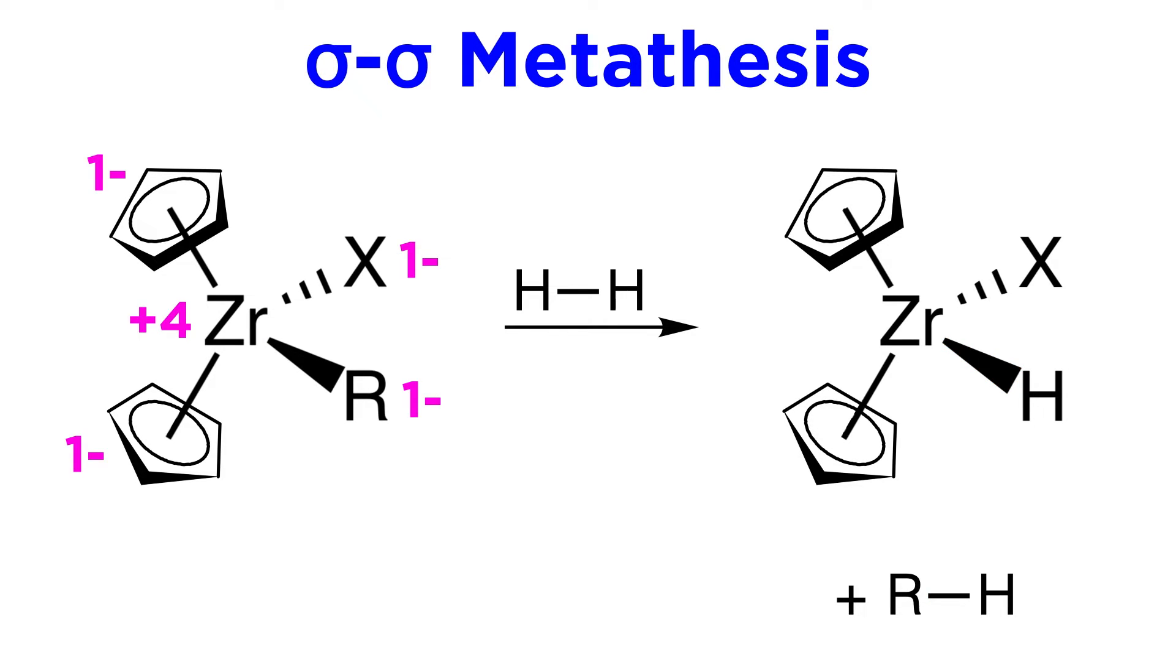In this example, the zirconium atom is in the plus four oxidation state, and since its ground state electron configuration ends in 5s24d2, that means its valence shell is empty, and it can accommodate this mechanism.